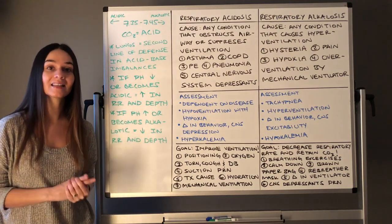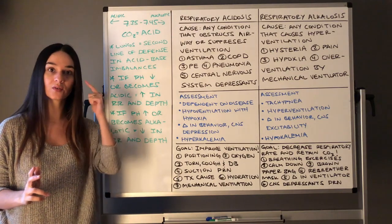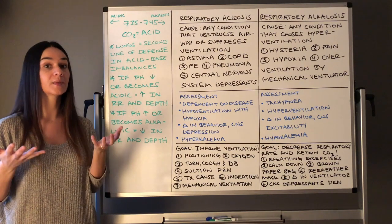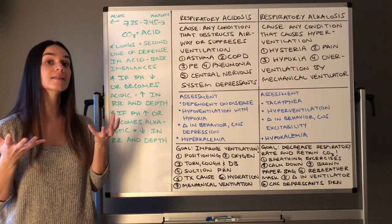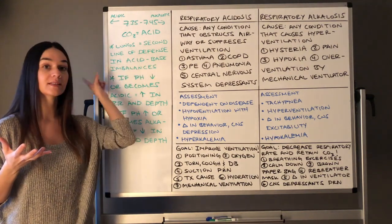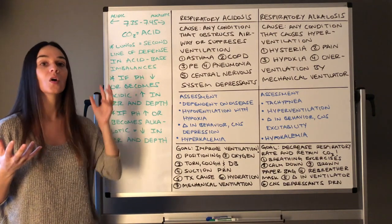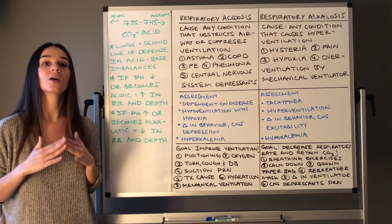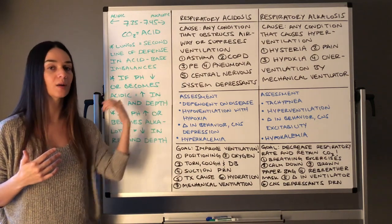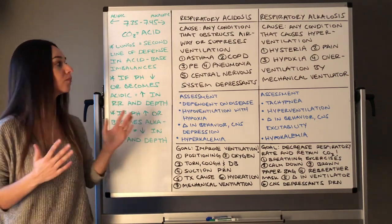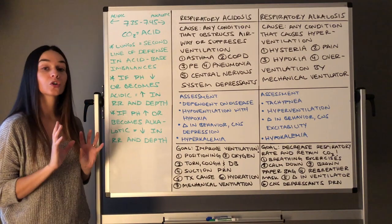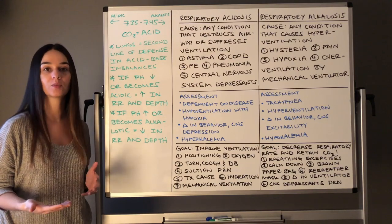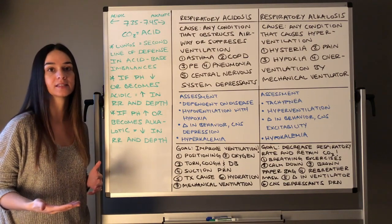Carbon dioxide is an acid, so always ingrain that in your brain. If we have too much CO2, our body is getting more acidic and our pH is decreasing. Or if we don't have enough CO2, our body is getting more alkalotic and our pH is increasing. These are the golden rules you need to remember related to how your lungs help when we start getting into acid-base imbalances.